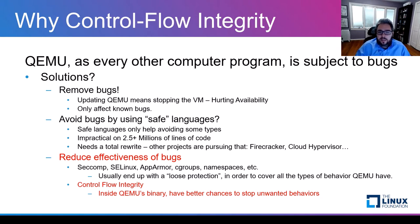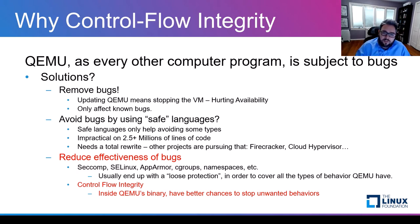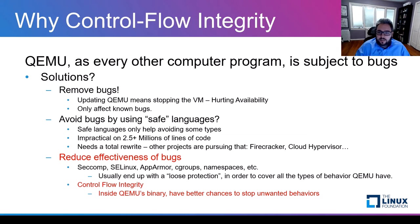This has actually been done in the past with techniques like SecComp, SELinux, CGroups, etc. The idea is to encapsulate a process and only allow operations that the process may do in normal cases. However, QEMU has several different behaviors, so these filters end up being too loose in most cases. We think that control flow integrity, or CFI, has better chances to stop unwanted behaviors and actually acts earlier than other techniques.